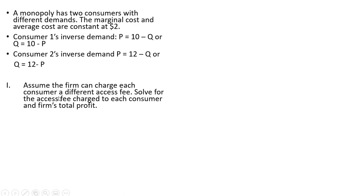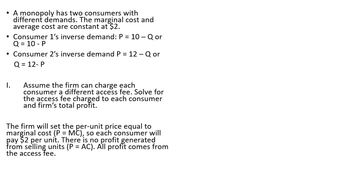In the first part, we're going to assume that the firm can charge each consumer a different access fee. We'll solve for the access fee charged to each consumer, and then the firm's total profit from this strategy. The firm will set the per unit price at marginal cost, so we're going to do marginal cost pricing here — the price will be $2. Since marginal cost equals average cost, there's going to be no profit generated from the selling of units. All profits will come from the access fee.